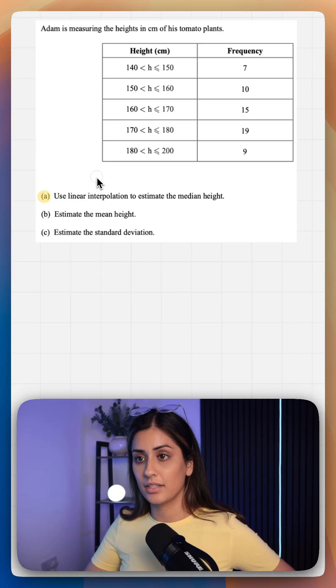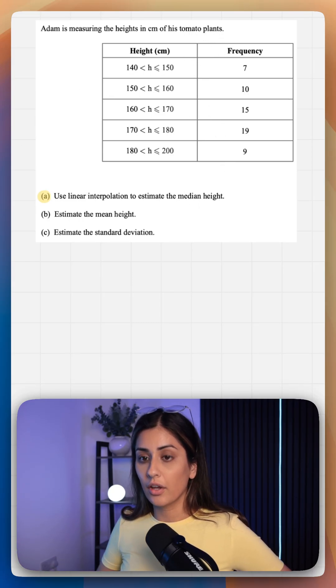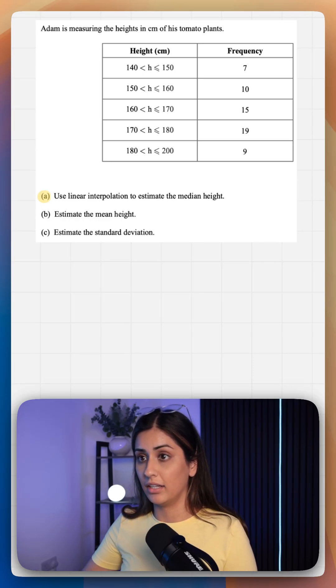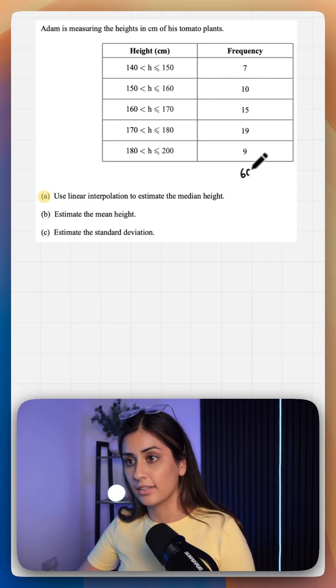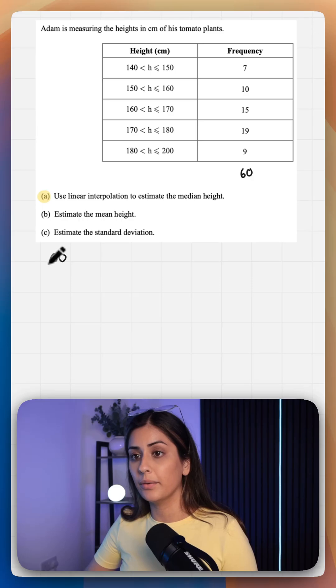We want to use linear interpolation to estimate the median height of tomato plants. Firstly, the median is our middle value. Our total frequency here is 60, so our median value is going to be our 30th value.